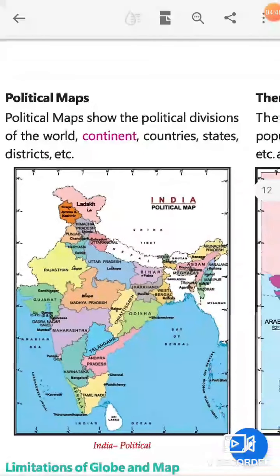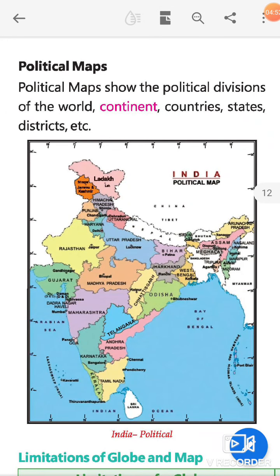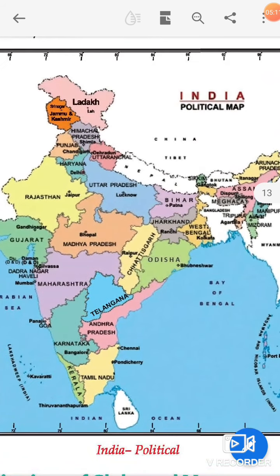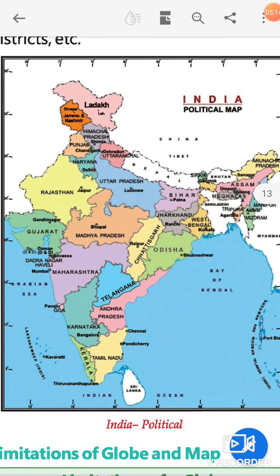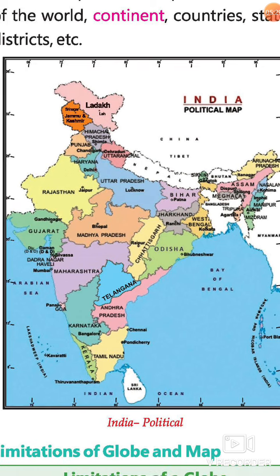Political map के द्वारा हम political division दिखाते हैं — इसमें continent, countries, states, और districts को दिखाया जाता है। यह एक political map है India का। इसमें Madhya Pradesh, Rajasthan, Uttar Pradesh, Bihar, Maharashtra, Telangana, Karnataka, Ladakh, Chhattisgarh, West Bengal, Jharkhand — अलग-अलग states को अलग-अलग रंगों से show किया गया है। इसीलिए इसको political map कहा जाता है।